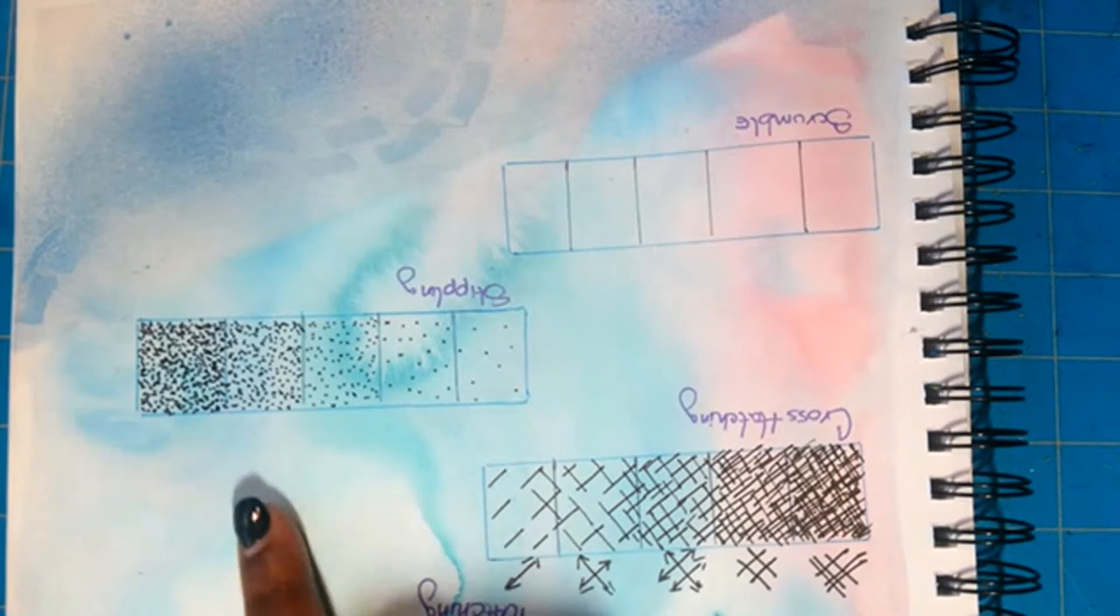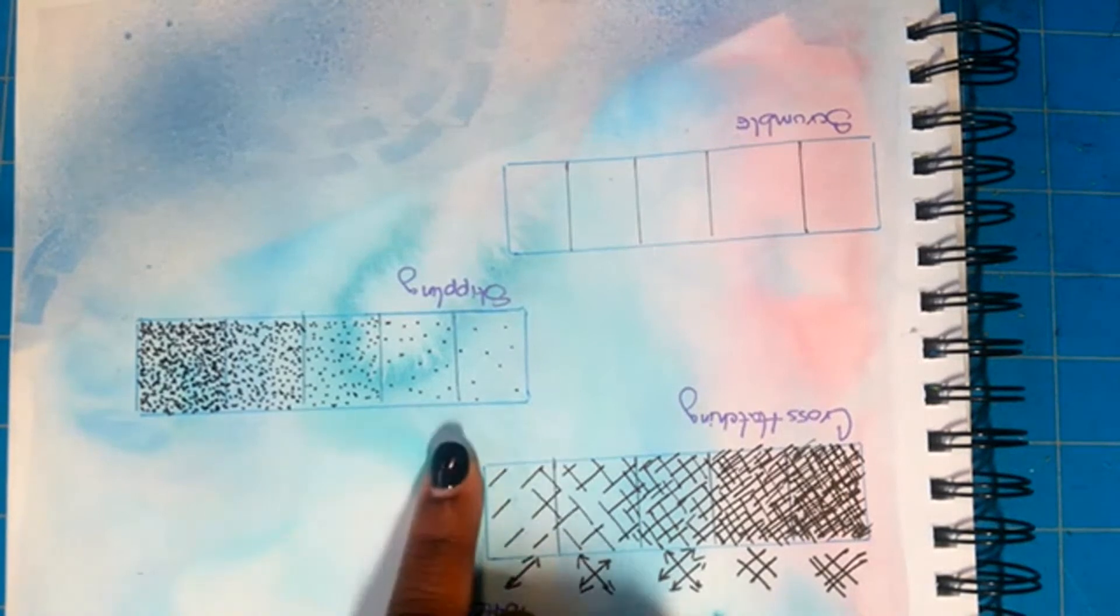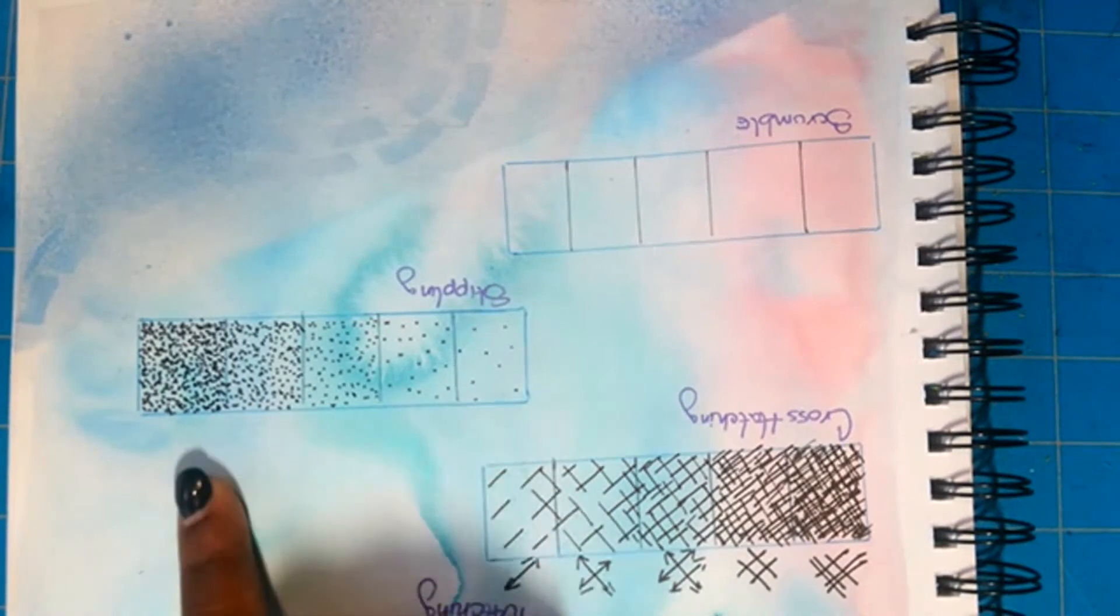So now you see I have more of a gradual change in my values, from lightest to darkest.